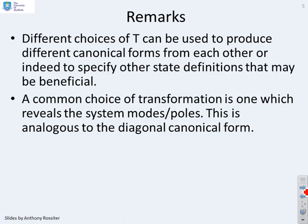Now, different choices of T can be used to produce different canonical forms from each other, or indeed to specify any state definition that may be beneficial or convenient. However, a common choice of transformation is one which reveals the system's modes or poles, and this is going to be analogous to the diagonal canonical form covered in the previous video.